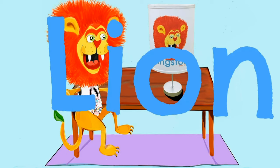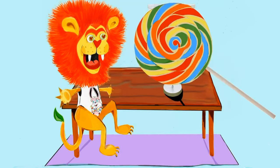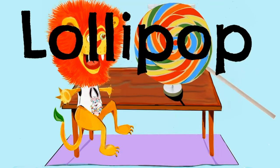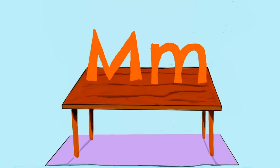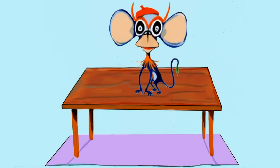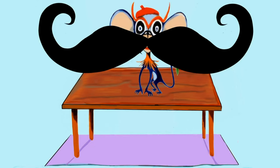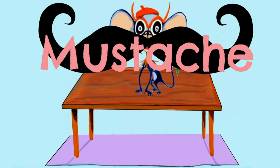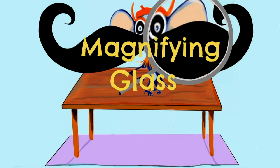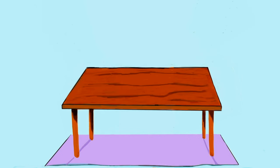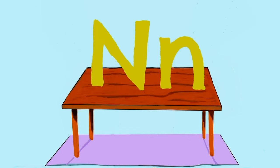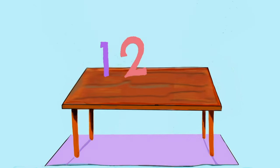There's Kingston the lion and a lollipop. Next we have the letter M — Pierre the monkey. Pierre has a moustache and a magnifying glass. Pierre is a funny, funny friend. Next is the letter N.